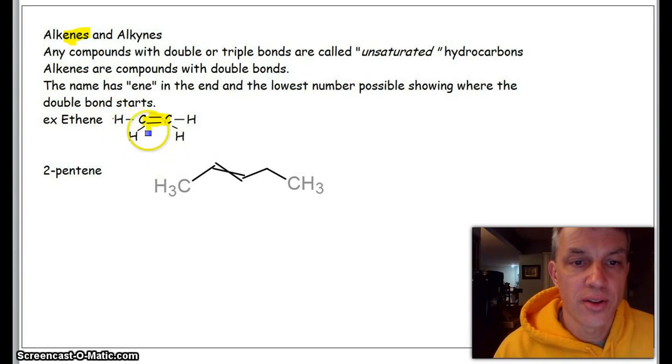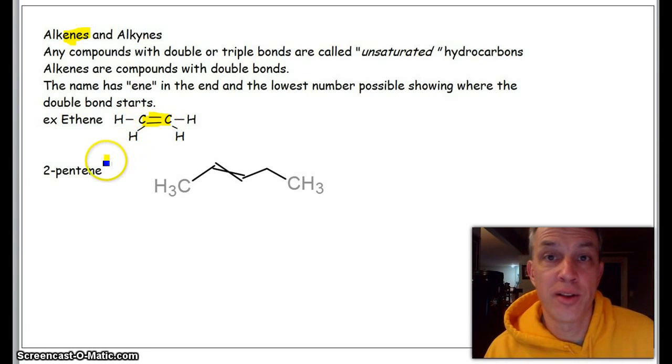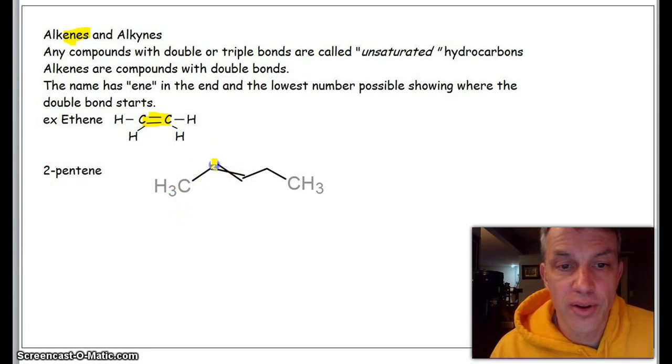So this would be ethene, and we don't need to put a number—we don't have to call it 1-ethene because it's the only place we can put it. This is called—not drawn very well, but this is called one, two, three, four, five—so this would be called 2-pentene.